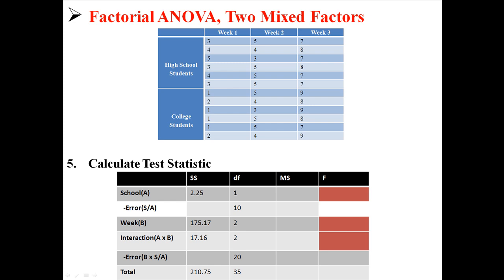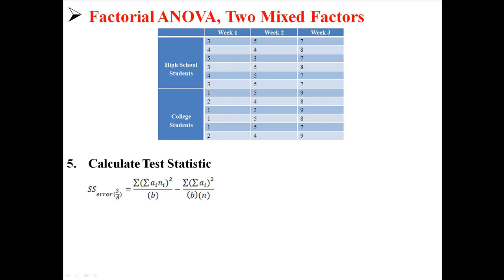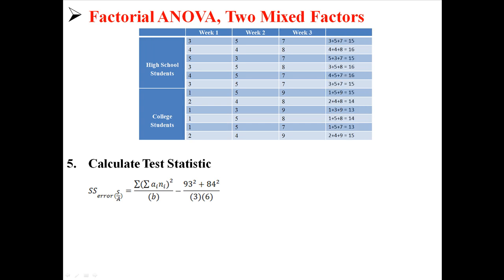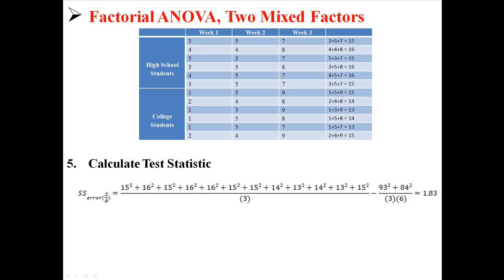Those are four sum of squares — we just need the two error terms now. For the sum of squares error for the independent factor, we use this equation. We already know the second part. We need to find each subject's sum at each level of A. For the first subject at A1 we got 15, for the second subject at A1 we got 16, and so on — giving us 12 sums for each subject at each level of A. On top, we square every one of those values and divide by B, which is 3. Once we do all that, we get a sum of squares error of 1.83.